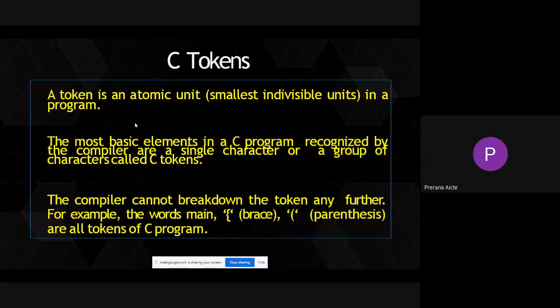Coming to the C programming language, here we have so many basic C tokens. A token is nothing but a small unit — a meaningful unit. It is called a token. To form a program, what are the different tokens present? To write a C program, what are the different atomic units we will use and how we will form a C program.